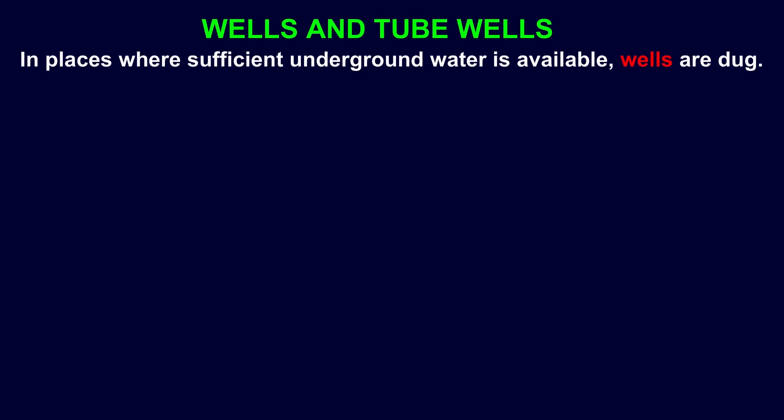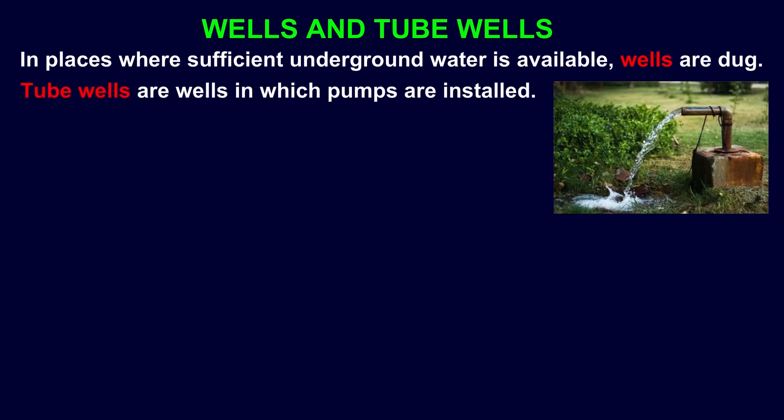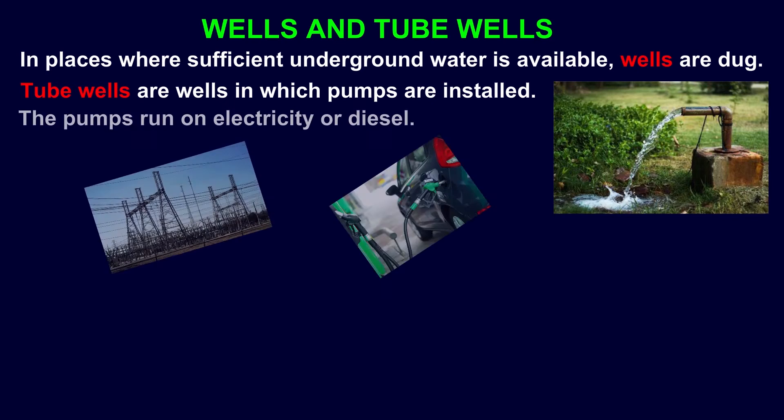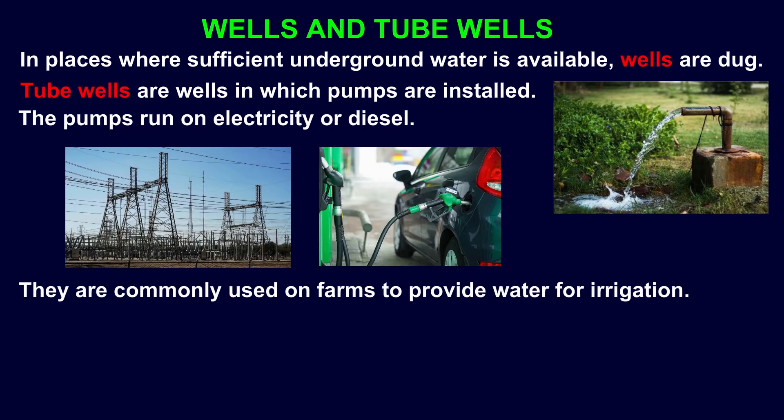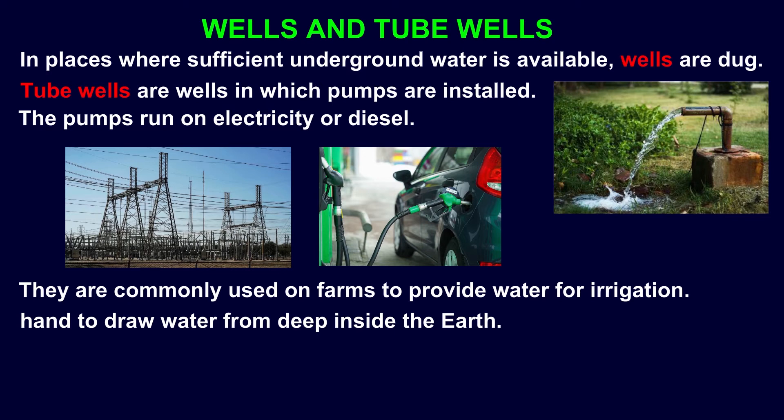In places where sufficient underground water is available, wells are dug. Tube wells are wells in which pumps are installed. The pumps run on electricity or diesel, and are commonly used on farms to provide water for irrigation. Hand pumps are worked by hand to draw water from deep inside the earth.